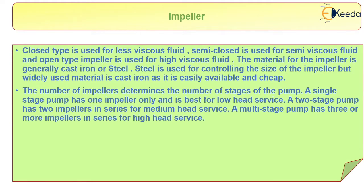In the case of the closed type, it is used for less viscous fluid. In the case of semi-closed, it is used for semi-viscous fluid, and the open type impeller is used for higher viscous fluid. The material for the impeller is generally cast iron or steel. Steel is used for controlling the size of the impeller, but the widely used material is cast iron as it is available and cheap.